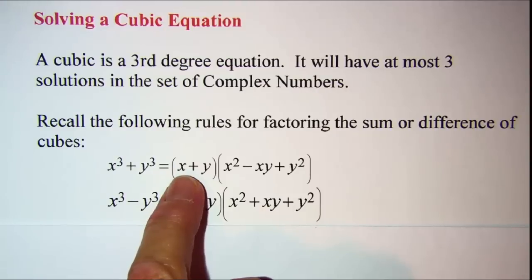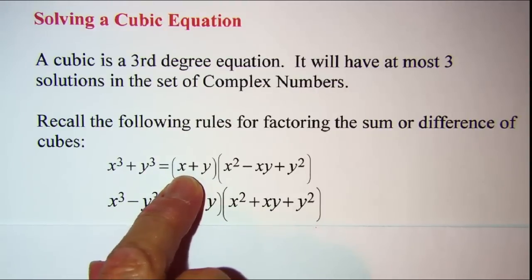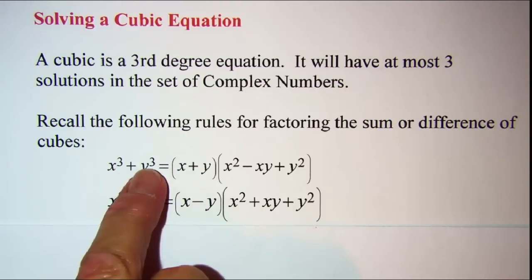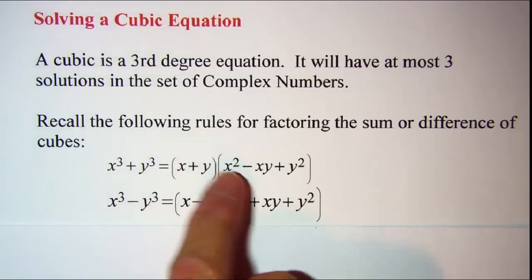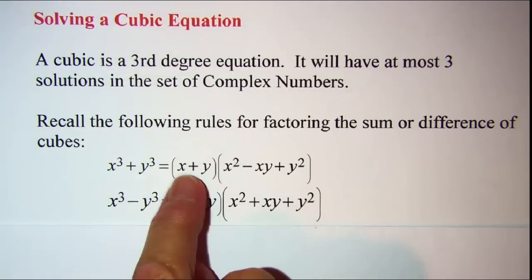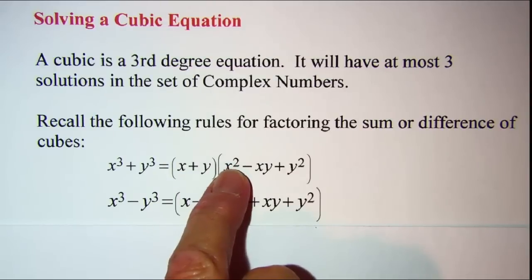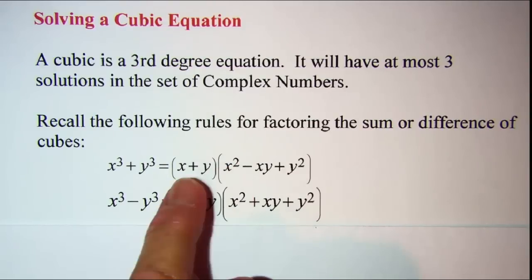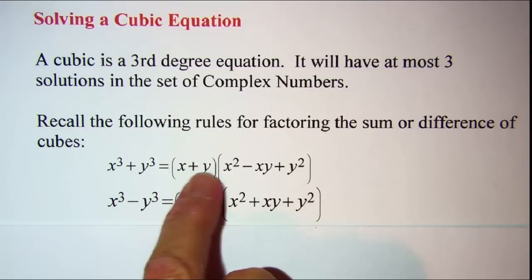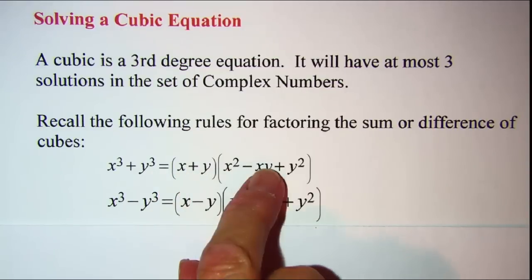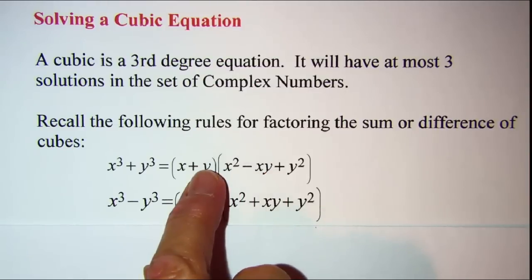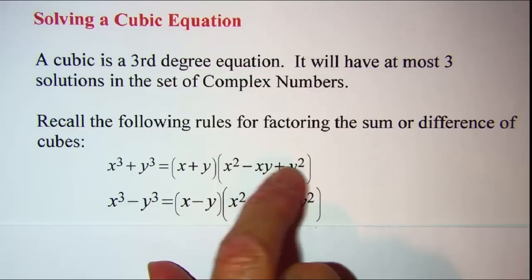The binomial terms are the cube roots of the cubes being factored. Once you have your binomial established, square the first term to get the first term in the trinomial, multiply the first by the second to get the middle term, and then square the second term of the binomial to get the last term in the trinomial.